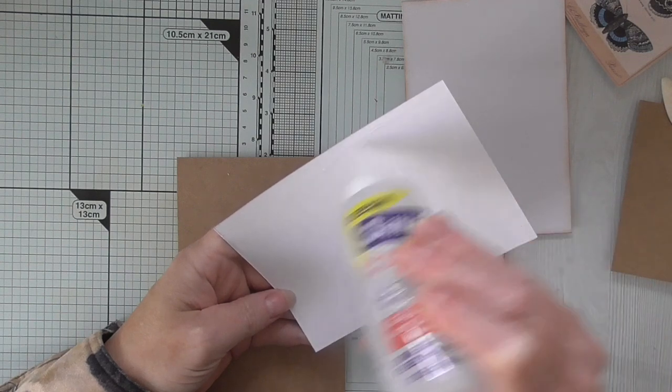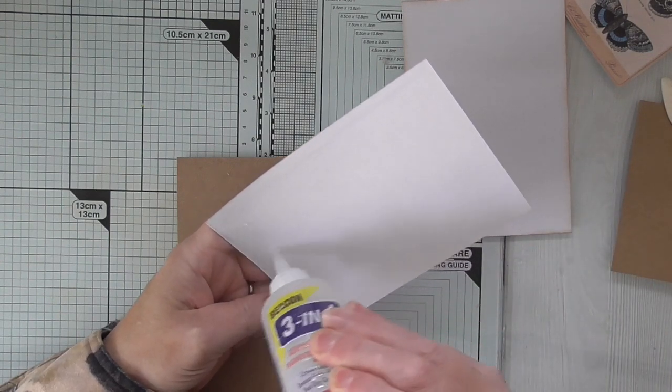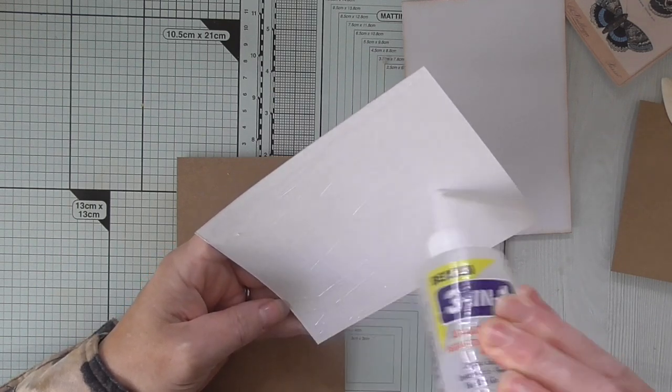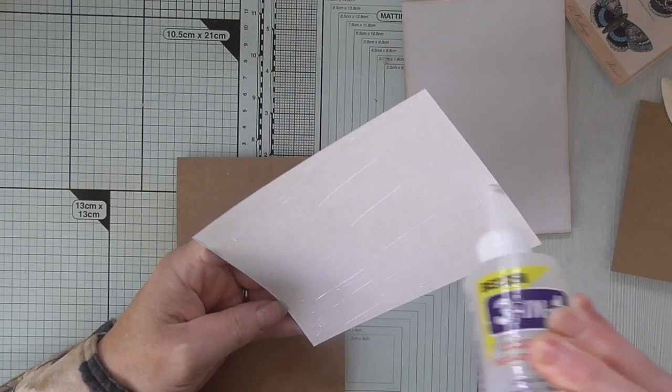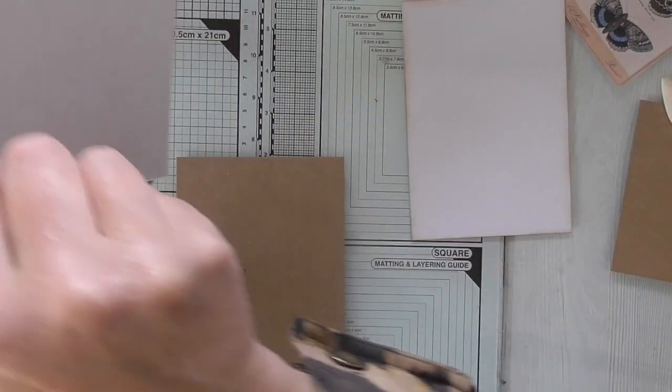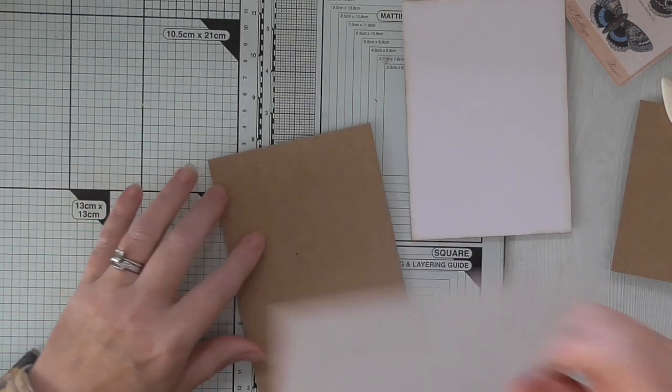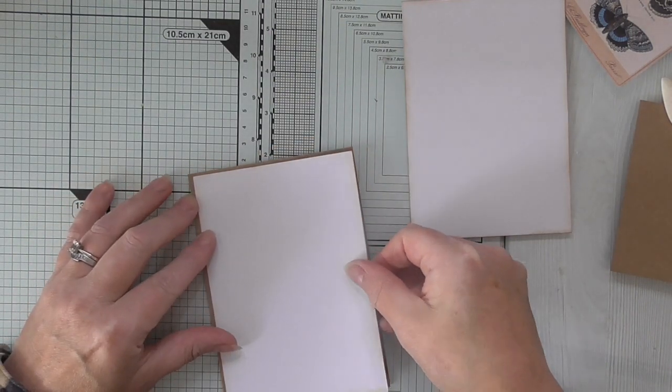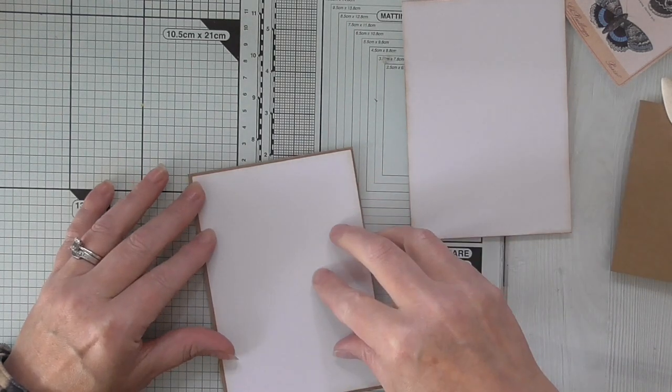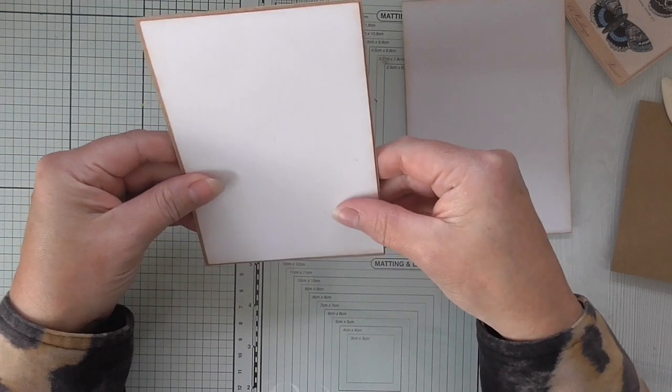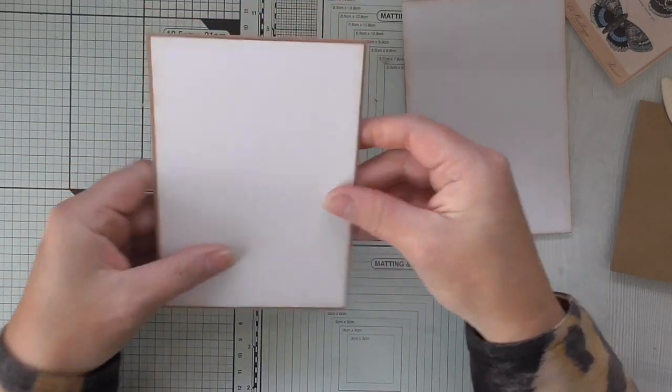So I've already gone ahead and I have cut my white layers. Let me just move my trimmer. So you need two of these. Each one needs to measure four inches by five and three quarters. I've inked them with vintage photo. I just need to, because this is quite steady card, just need to give it a really good score. And we're going to stick one of these on the front and one inside.